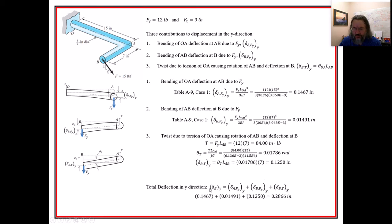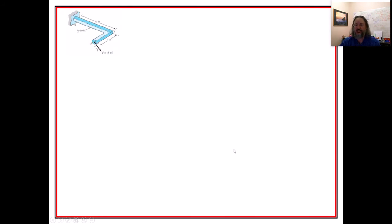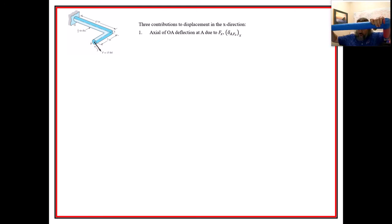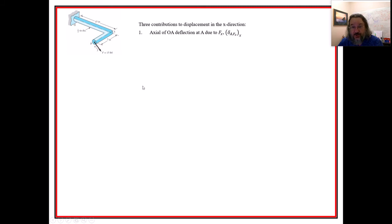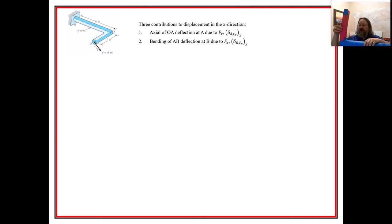Adding up all the Y-direction deflections gives a total displacement of 0.2866 inches. Now for the X direction, there are three contributions: the axial stretching of OA — it's going to get longer — and the local bending of AB in the X direction.